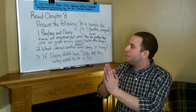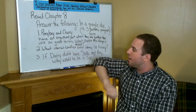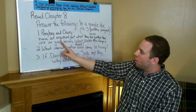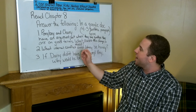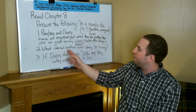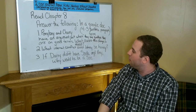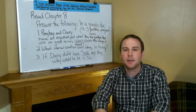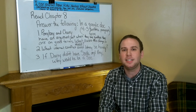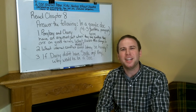Alright, so again please answer the following three questions in a Google Doc. Number one: Ponyboy and Cherry have an argument, but when they say goodbye they are on good terms — what causes the change in mood? Number two: What internal conflict could Johnny be having? Number three: If Darry didn't have Soda and Ponyboy, why would he be a Soc? Join me next week, 6th graders — we'll be delving into chapters 9 and 10 of The Outsiders. Keep reading, 6th graders.